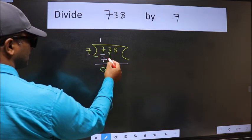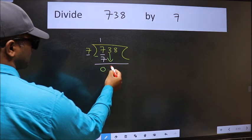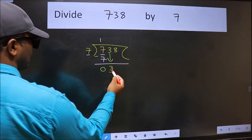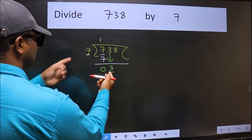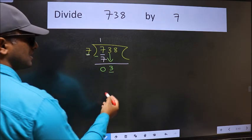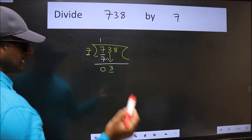After this, bring down the beside number. So 3 down. Now here we have 3 and here 7. 3 is smaller than 7, so we should bring down the second number.